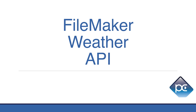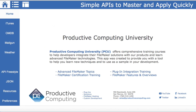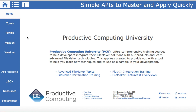This video will demonstrate how to connect your FileMaker solution to a weather API — or as I like to call it, a funny thing happened on the way to Fishery Sloping Packets API. We'll be using the same app that we use in our courses for API connections like MailChimp and Stripe and the fundamentals. You may have seen it demonstrated in our previous YouTube videos covering iTunes and OMDB.